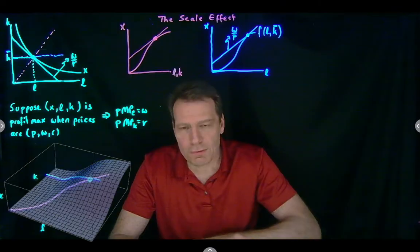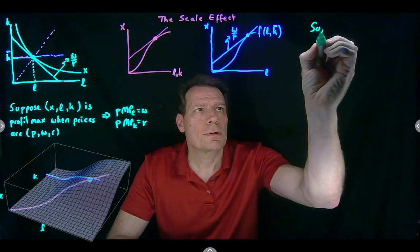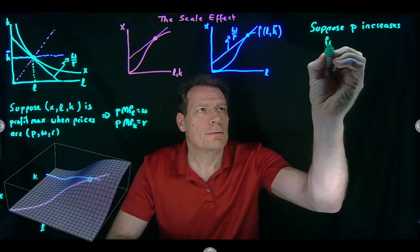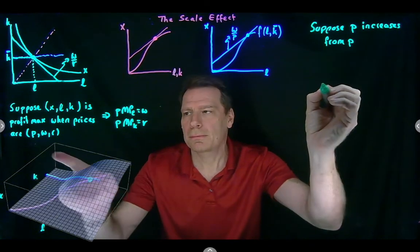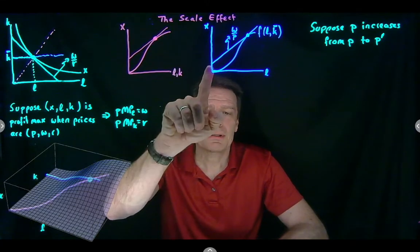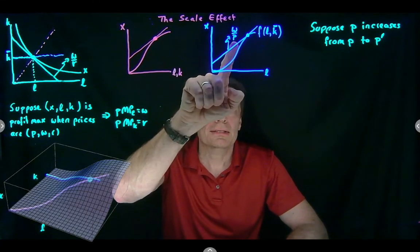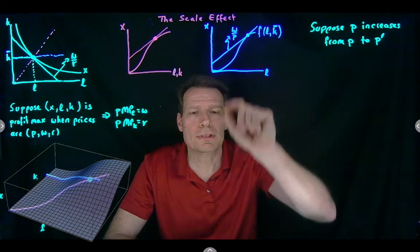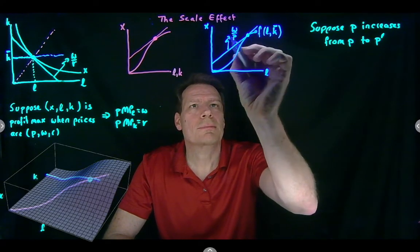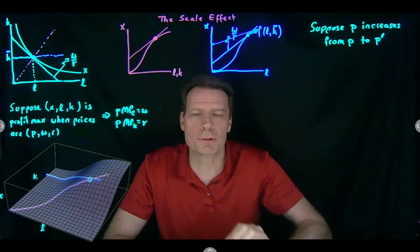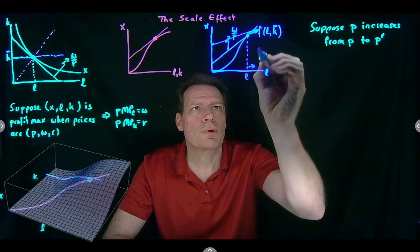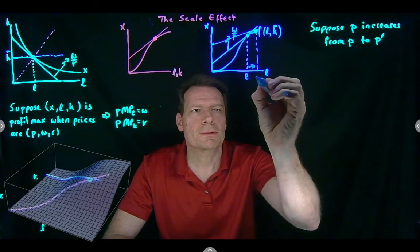We can now ask what happens if the price increases — suppose the output price p increases to a new price p prime. In the short run, the price in the denominator is increasing, which means the fraction w over p as a whole is decreasing, so the profit line becomes shallower. The new profit maximizing production plan has a tangency further out on the shallower portion of the short run production function, so instead of labor L, we use more labor — something like L prime.